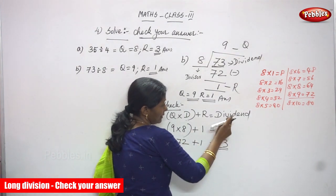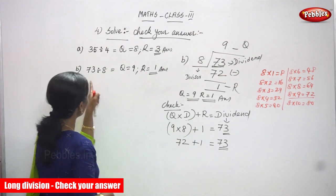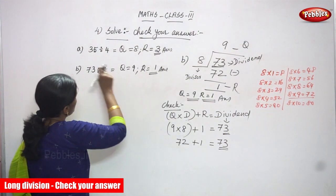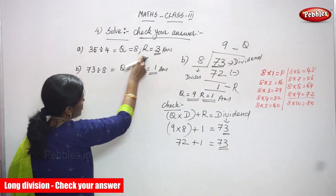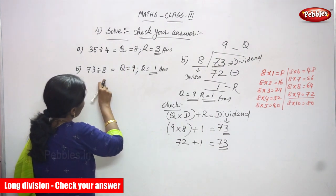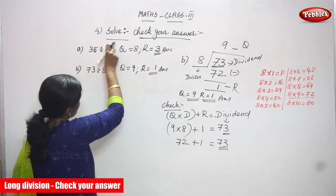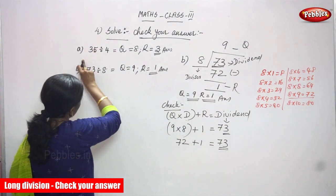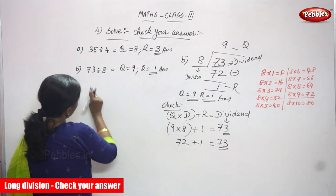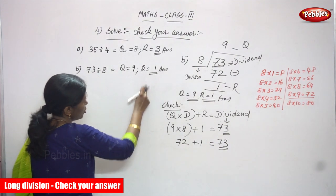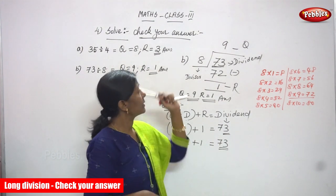So 73 divided by 8: quotient is 9 and remainder is 1. For question A: 35 divided by 4, the quotient is 8 and remainder is 3. For question B: 73 divided by 8, the quotient is 9 and remainder is 1. These are the right answers — I think you understand how to solve and check your answer.